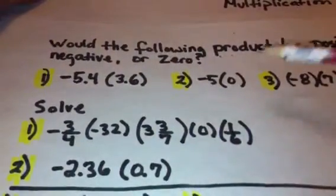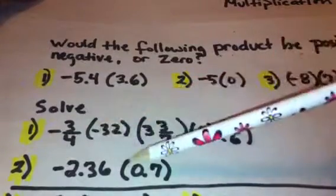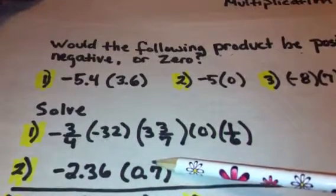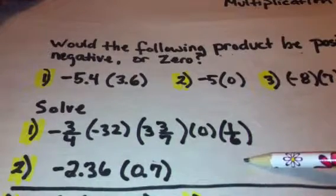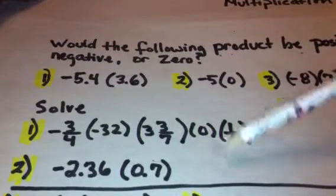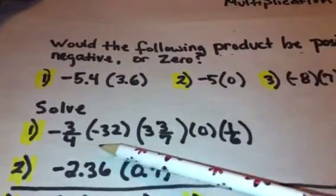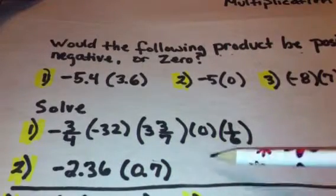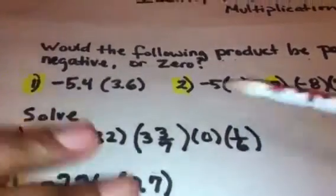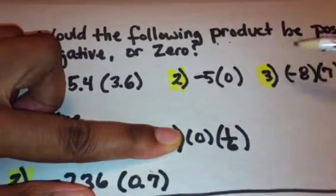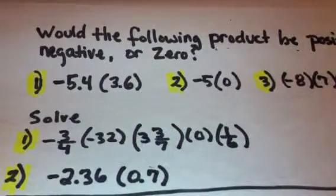Okay, moving along. It says simply solve. Okay, and the first one is negative 3 fourths times a negative 32 times 3 and 3 sevenths times 0 times 1 sixth. And when you see something like this, and this is what's so good about math is because there are so many shortcuts. If you just know what the rules are, you have a zero here. So anything before that zero times zero is going to be a zero. So what you're left with essentially is zero times 1 sixth. And what do we know about zero? We know that anything times zero is zero. So the answer to this very long multiplication problem with unlike signs is just simply zero. Isn't that beautiful?